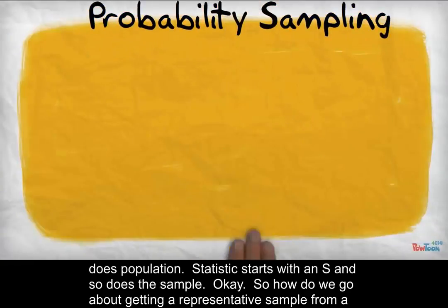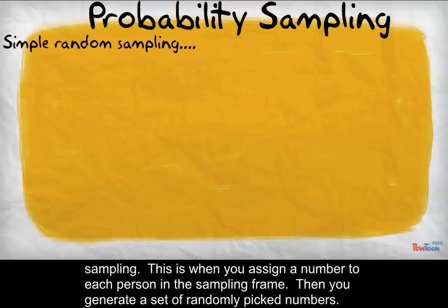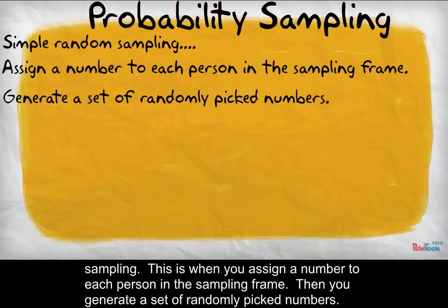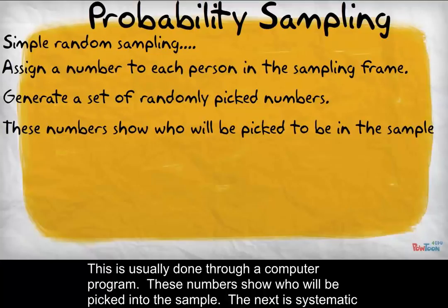So, how do we go about getting a representative sample from a population? We do this through probability sampling. We're going to talk about four different kinds. The first is simple random sampling — this is when you assign a number to each person in the sampling frame, then generate a set of randomly picked numbers, usually done through a computer program. These numbers show who will be picked into the sample.